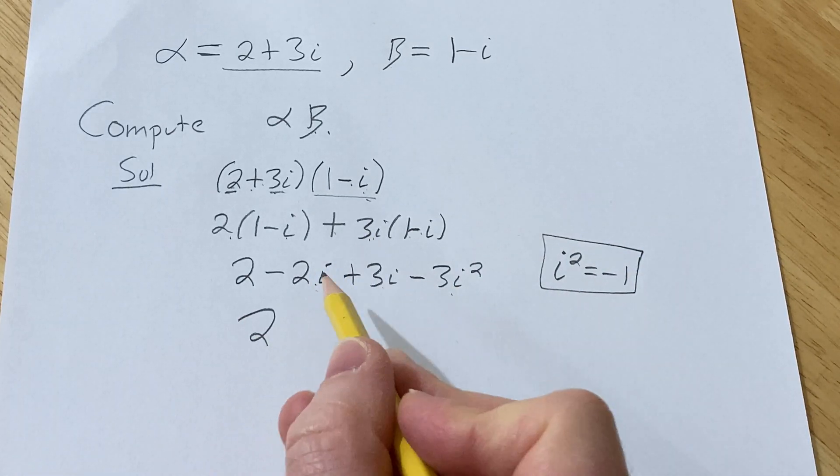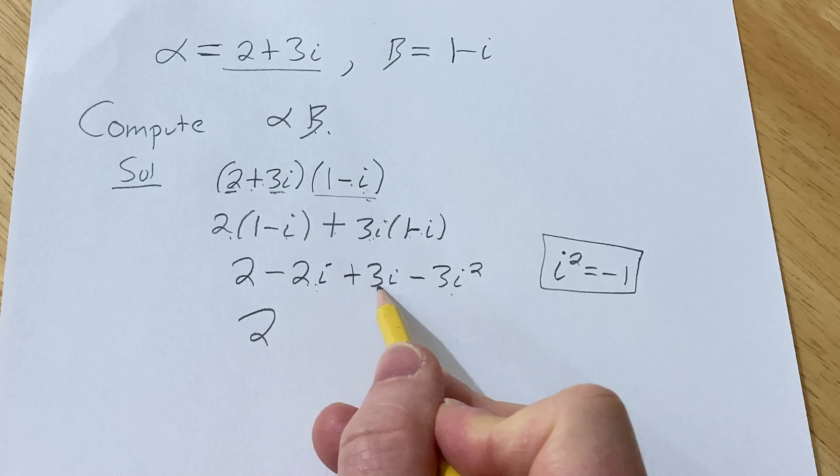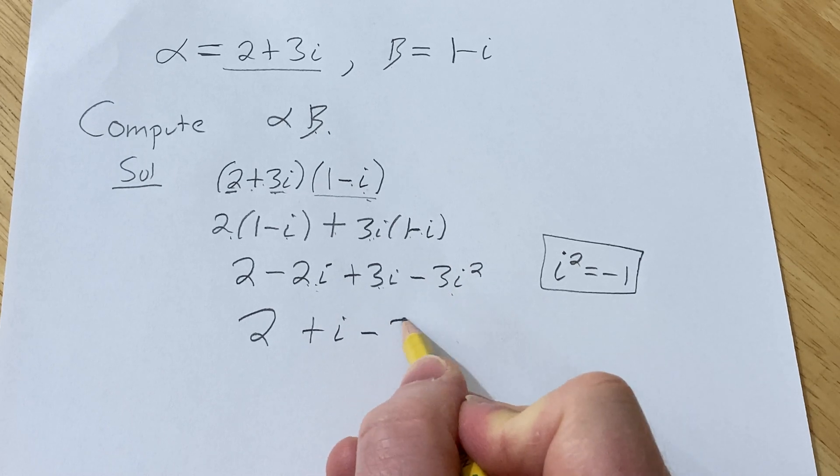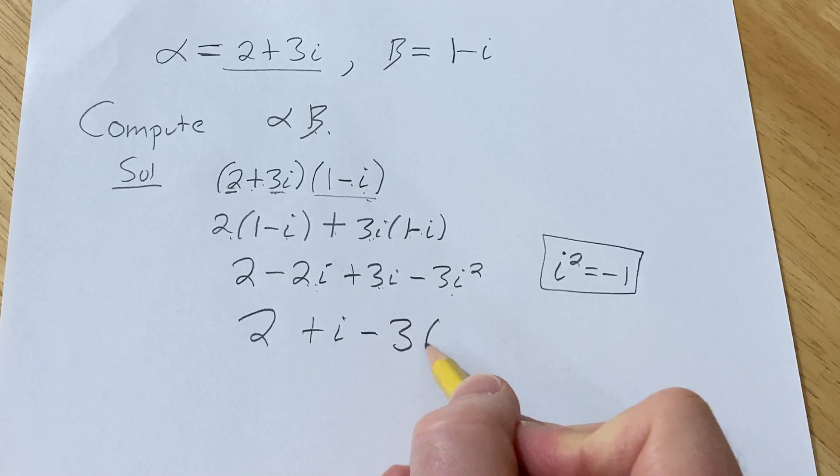So we have 2. Then negative 2i plus 3i is just 1i, so i. And then minus 3, and then i squared is negative 1.